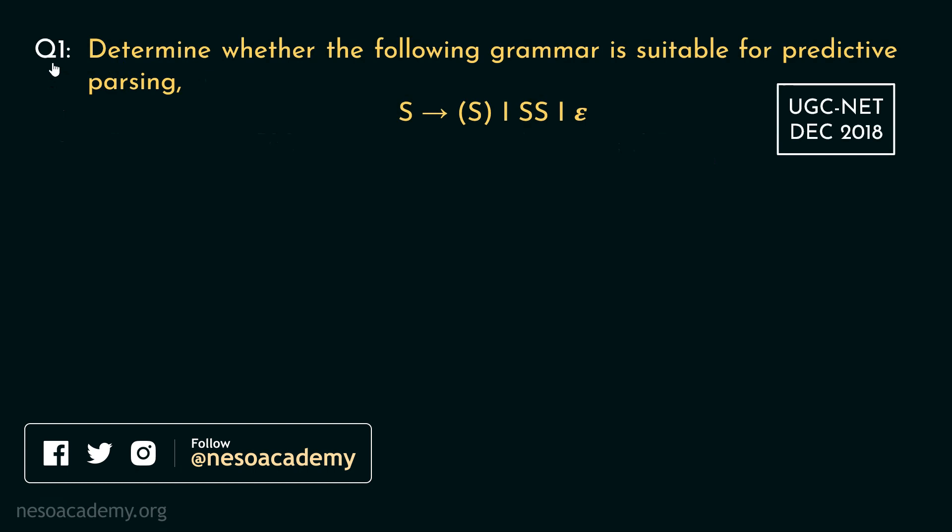Consider this question: determine whether the following grammar is suitable for predictive parsing. The grammar has productions S can be written as left parenthesis S right parenthesis, or SS, or Epsilon.